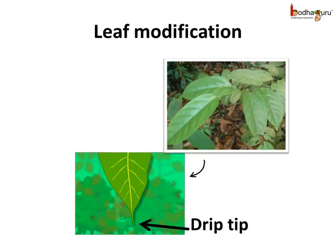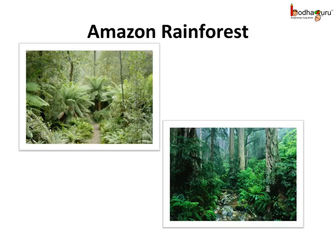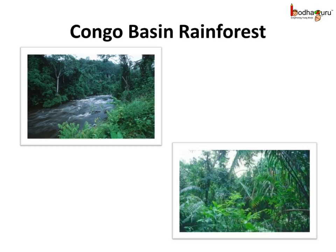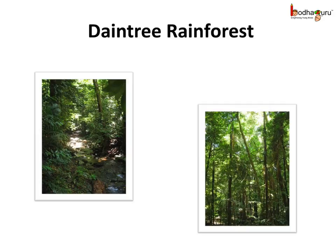The drip tip prevents the leaves from rotting. The world's largest tropical rainforest is the Amazon rainforest, found in the heart of South America. The vast forest of the Congo Basin is the second largest tropical rainforest on the earth, and it is in the heart of Africa. Another rainforest is the Daintree Rainforest — it is the largest continuous area of tropical rainforest on the Australian continent.